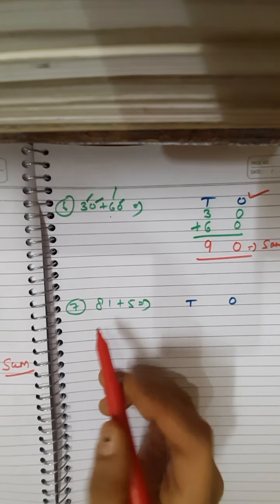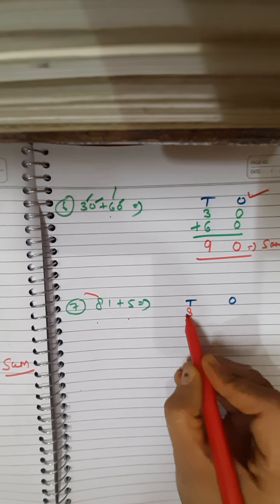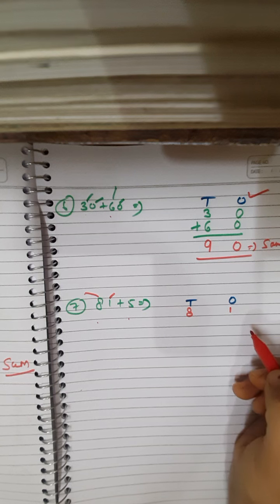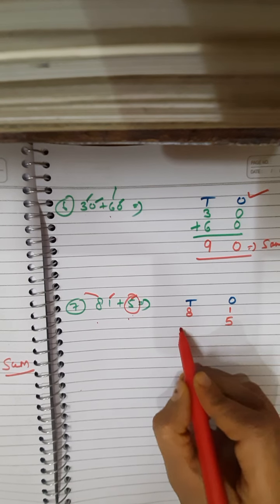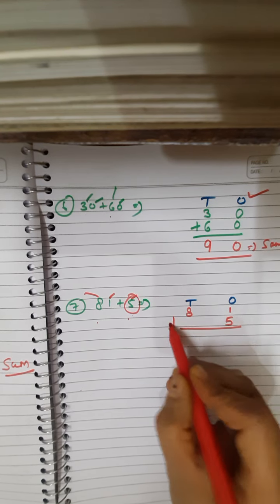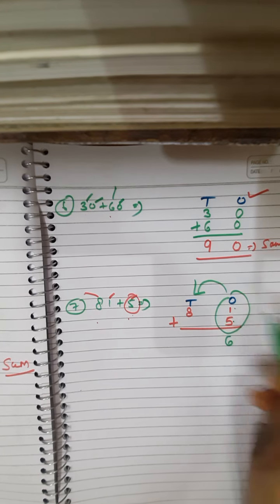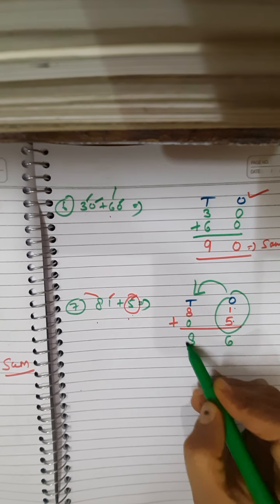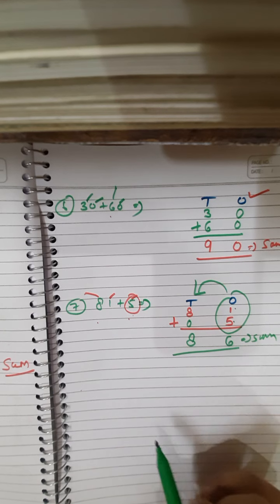The next example is 81 plus 5. The digit 8 goes to the 10s place and 1 goes to the 1s place. The 5 is a single digit so its place value is 1s — I write 5 in the 1s place. Now add the 1s digits: 1 plus 5 is simply 6. Then the third rule: move to the 10s place — only 8 here, so 8 plus 0 is 8. So the sum of 81 plus 5 is 86.